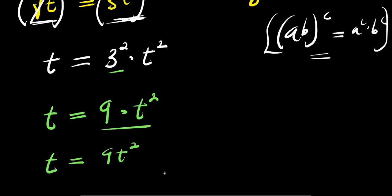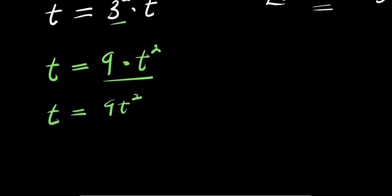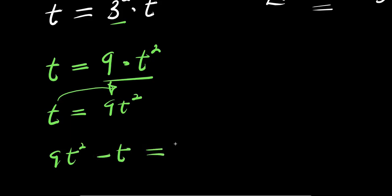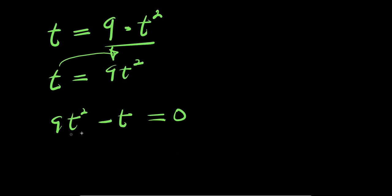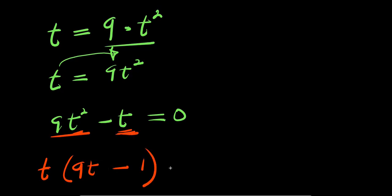From here we have t equals 9 times t squared, that is 9t squared. So we move this t over here — it becomes 9t squared minus t equals 0. At this point we have t in both terms, so we factor out t: t times (9t minus 1) equals 0.